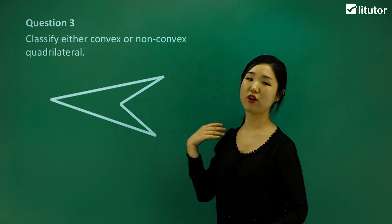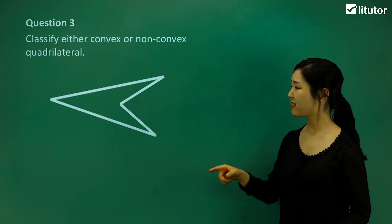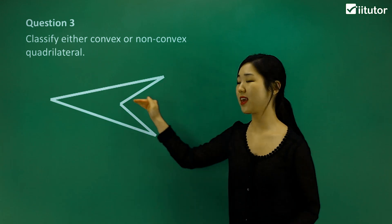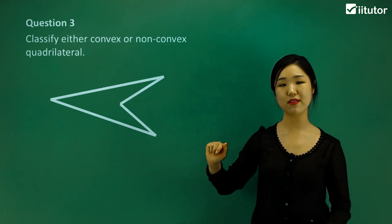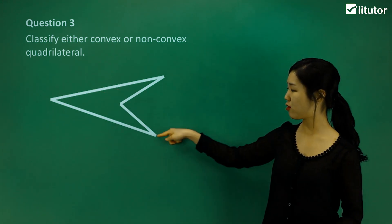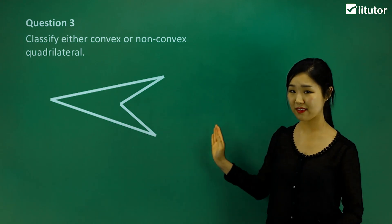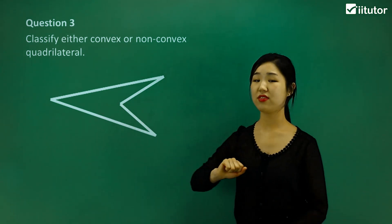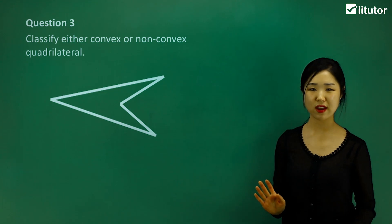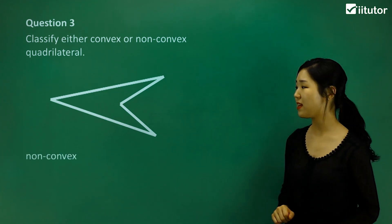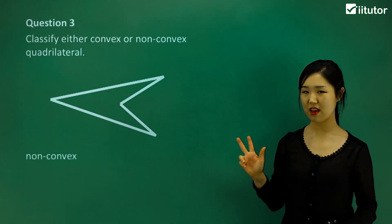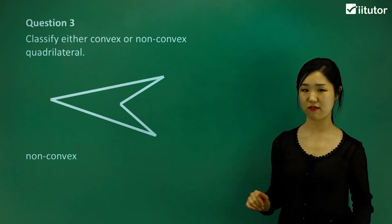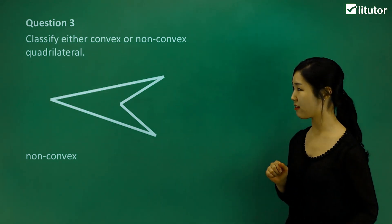Question three — let's classify if this is convex or non-convex. Clearly, this vertex here is going inwards, towards the inside of the shape. If I join these two diagonals, the diagonal will be outside the shape. And finally, this angle is a reflex angle — it's greater than 180 degrees. So it must be non-convex. It satisfies those three key features of a non-convex quadrilateral.